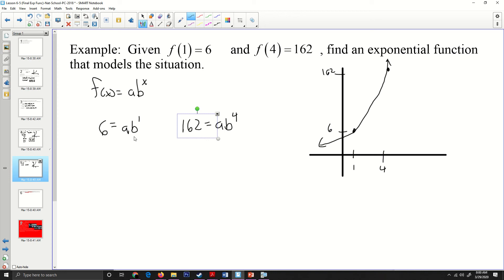Now I have two equations and I have two variables that I have to solve for. Now, the easiest variable to solve for is a in both situations. So I'm going to divide both sides by the B expression. So on this first one, I'll have a equals six over B to the first power. And this one, I'll have a equals 162 over B to the fourth power. Now, because both of these expressions have the same A in it, that A and that A have to be the same for me to have a function. Since this A and this A are equal, I can take this expression six over B and 162 over B to the fourth, and I can set them equal to each other. So I'm going to go six over B is equal to 162 over B to the fourth.